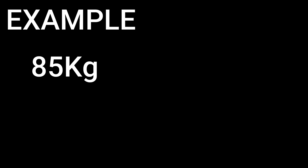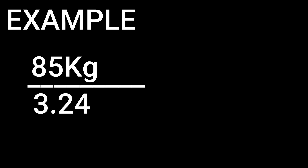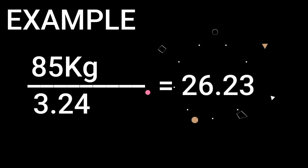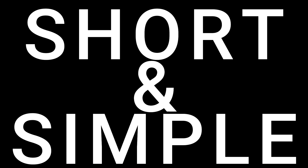So 85 kilograms divided by 3.24 equals 26.23 — that is your BMI. That's how you compute your BMI, class, and remember, everything is easy!